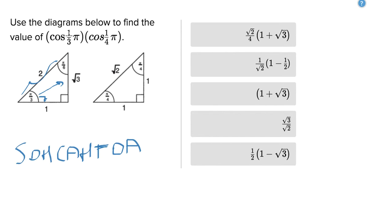So if we do the cosine of pi over 3, well pi over 3 is right here, cosine is adjacent over hypotenuse, the adjacent value is 1, the hypotenuse value is 2, so that's going to be 1 half.